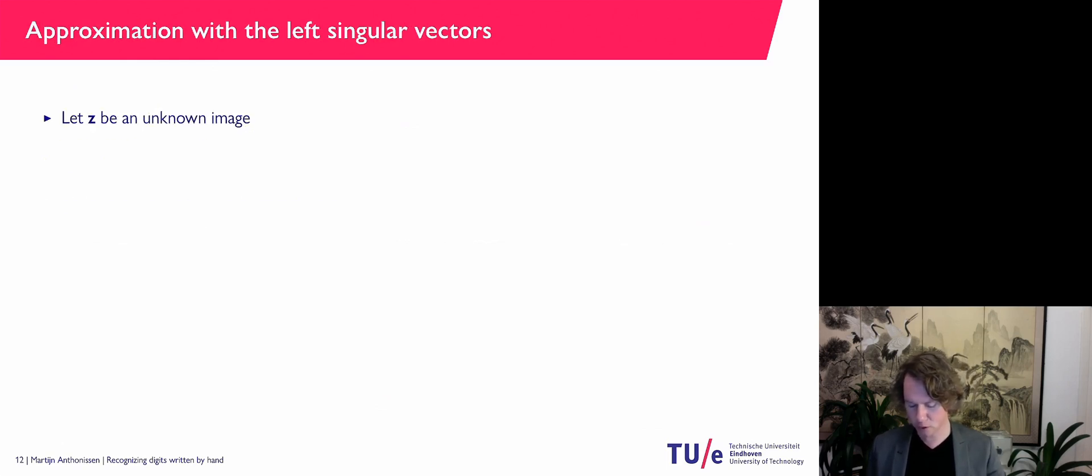So I'm going to do the same thing for the other nine digits. And then our next step is if you have a new unknown image. And I do that very abstract. I denote that with a vector Z. So Z is a vector in R^256.